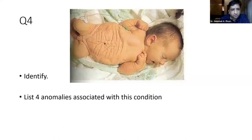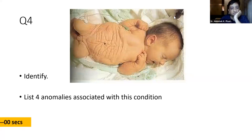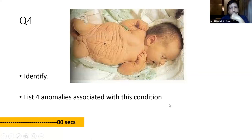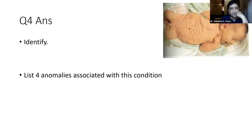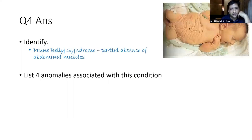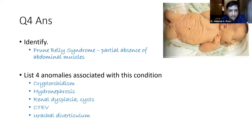Question 4: Identify — easy one. List four anomalies associated with this condition. Most of you may have answered correctly — it is prune belly syndrome, which is partial absence of abdominal muscles. The four anomalies associated include renal dysplasia, cysts, hydronephrosis, cryptorchidism, VUR (vesicoureteral reflux), and urachal diverticulum. Fellows need to be very familiar with these spotters of babies with anomalies.